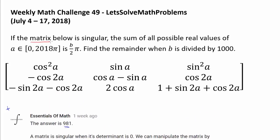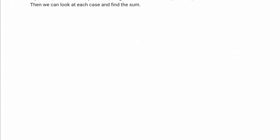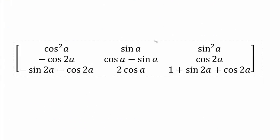To begin with, let's think about what it means for a matrix to be singular. This can mean many things, but the one we particularly care about is that a singular matrix has a zero determinant. A matrix is singular if and only if it has a determinant of zero. So really, what we want to find is the sum of all possible real values of A in this interval that will make the determinant of this matrix zero.